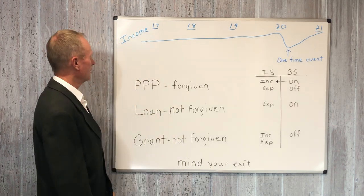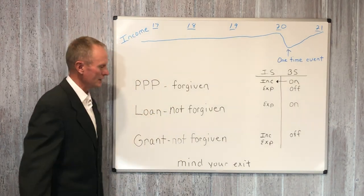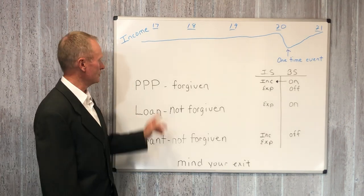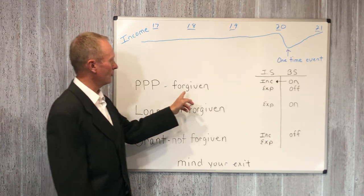The second thing I wanted to talk to you about today was these three types of loans, the government loans that we're seeing business owners get right now. The first one is the PPP loan, and it can be forgiven.